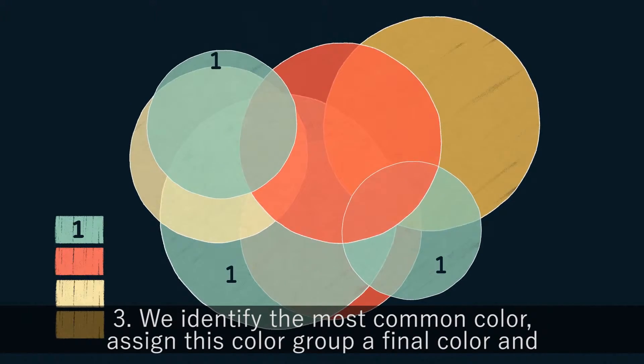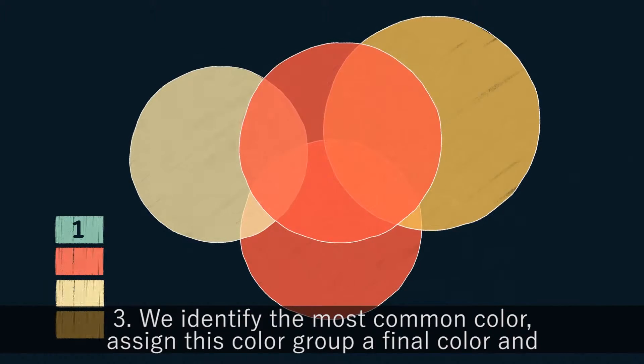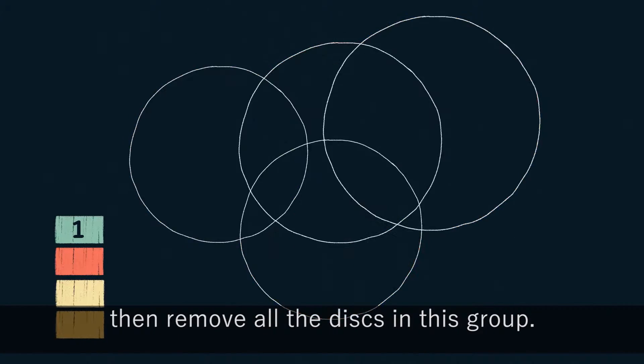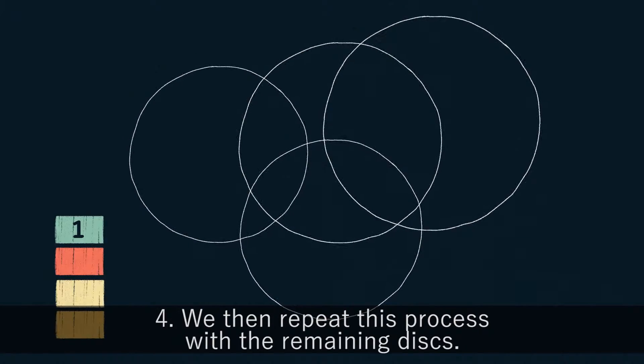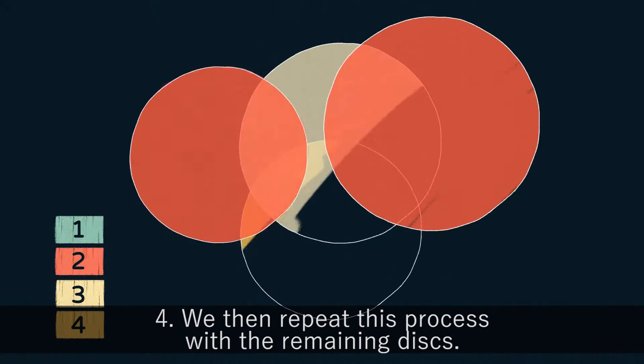Three, we identify the most common color, assign this color group a final color, and then remove all the disks in this group. Four, we then repeat this process with the remaining disks.